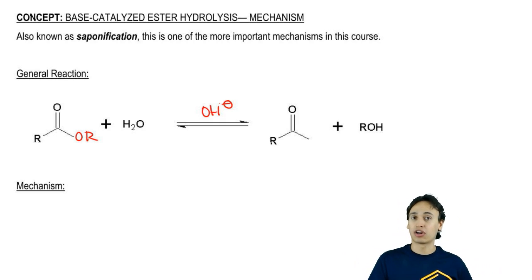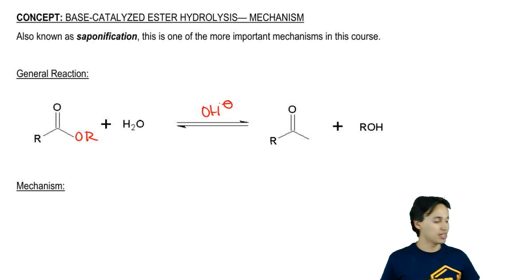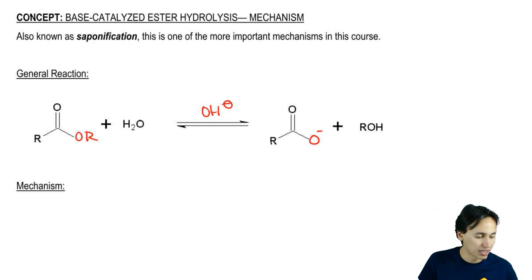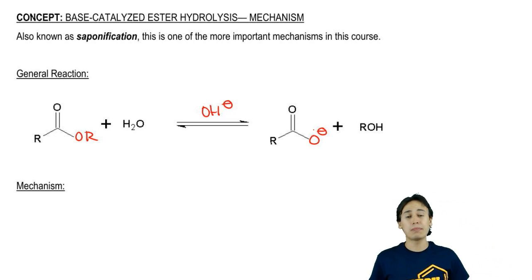Now, we would expect to get a carboxylic acid, but if all you have is base present, you're actually going to yield a carboxylate anion. That makes sense because there would be nothing around to protonate it. In the absence of a protonation step...